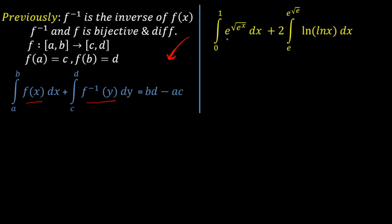These functions are very difficult to integrate individually because you won't find a function whose derivative equals e raised to the power of e raised to the power of x over 2, and similarly for ln(ln(x)) — you won't find a function whose differentiation gives ln(ln(x)). So individually they are very difficult to integrate. By looking at this problem with two integrations given, maybe we can use this property. For that we need to check whether the inverse of one function is the other.